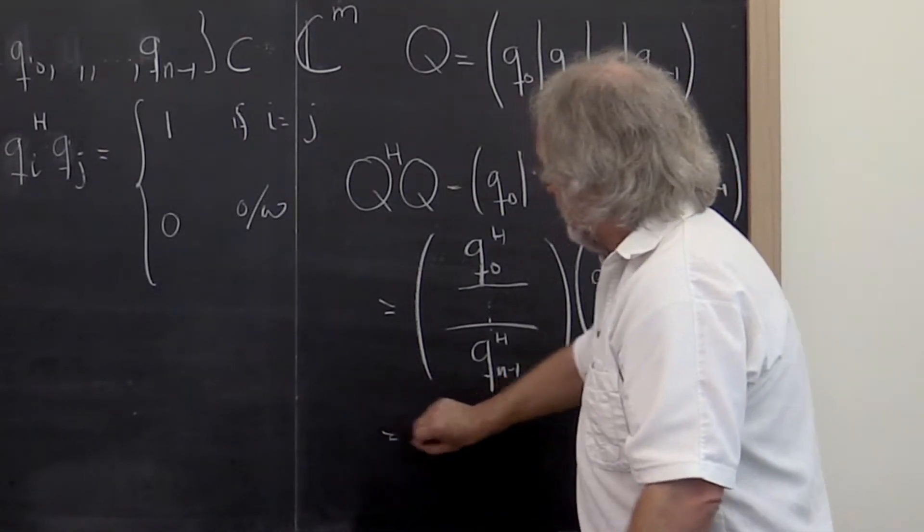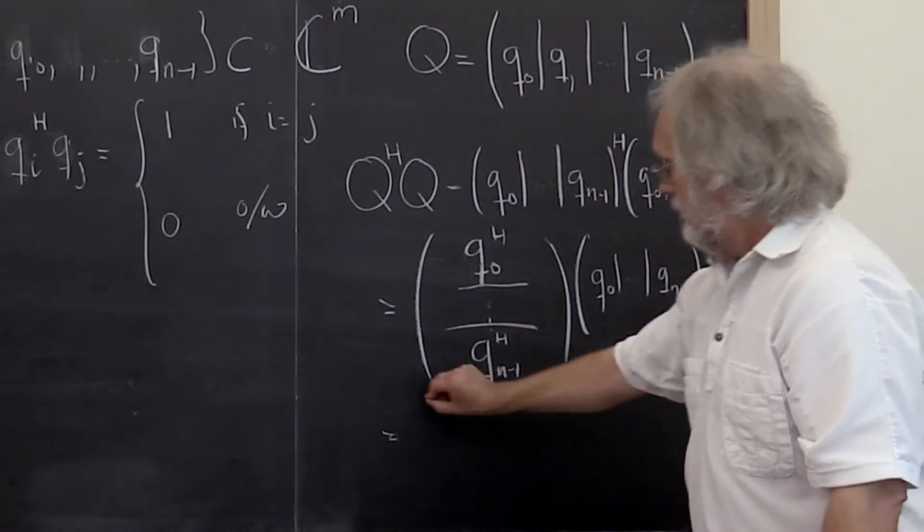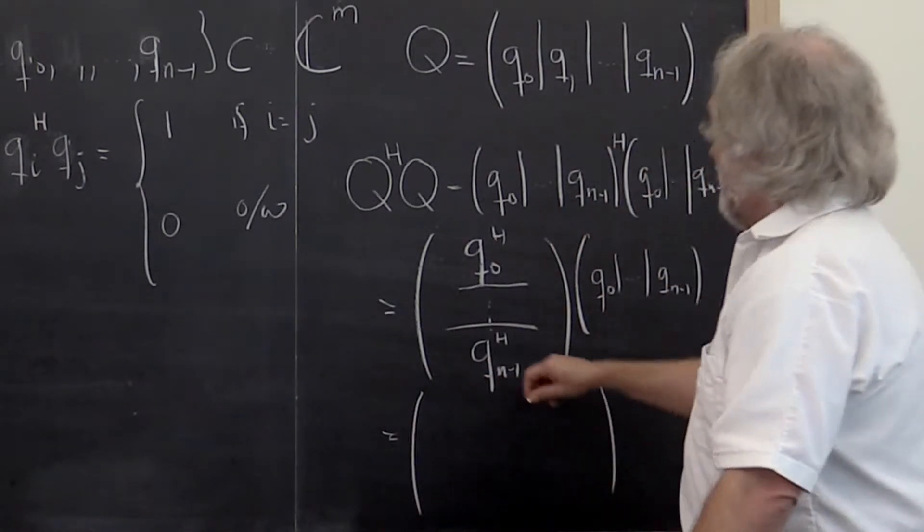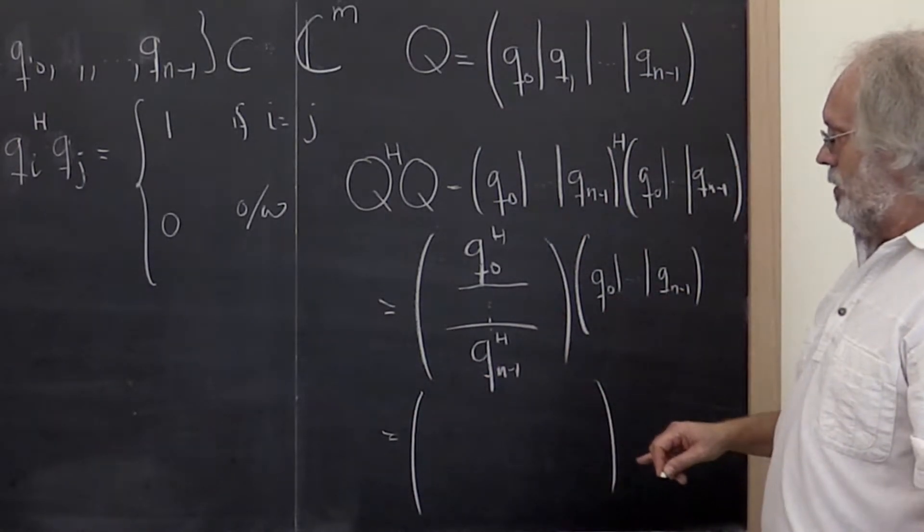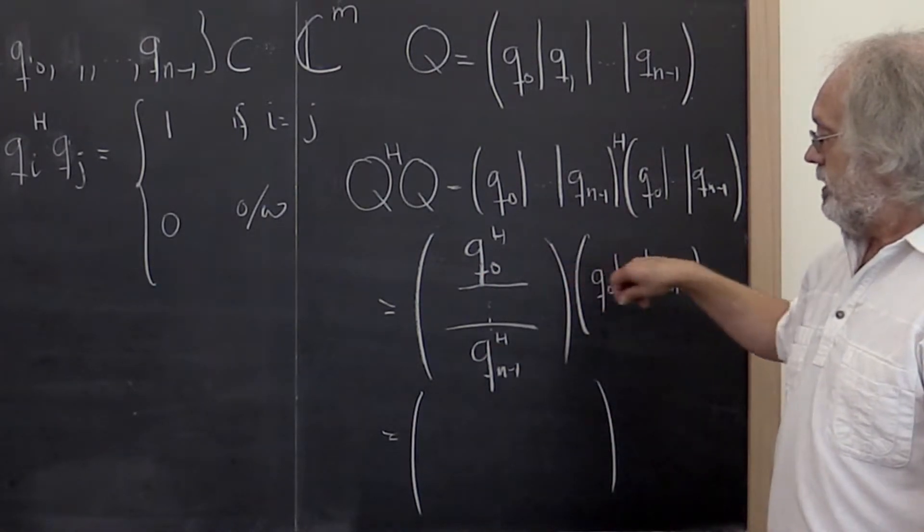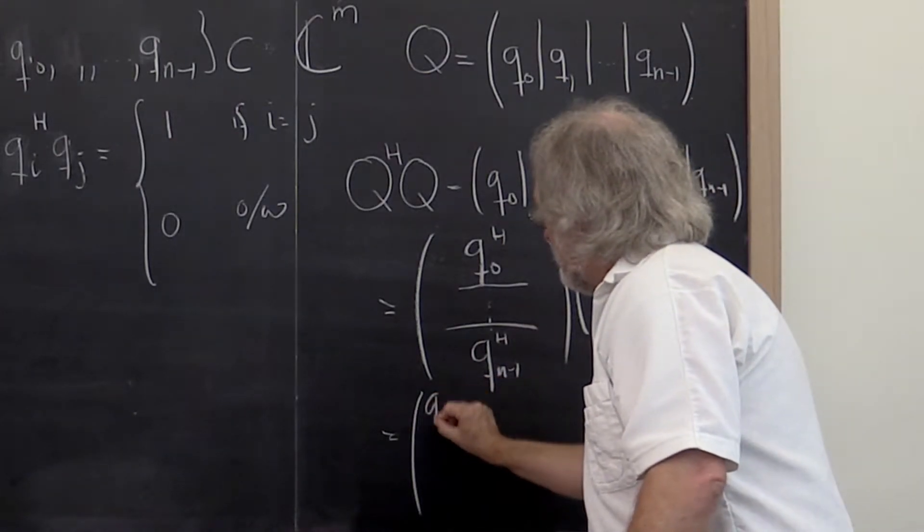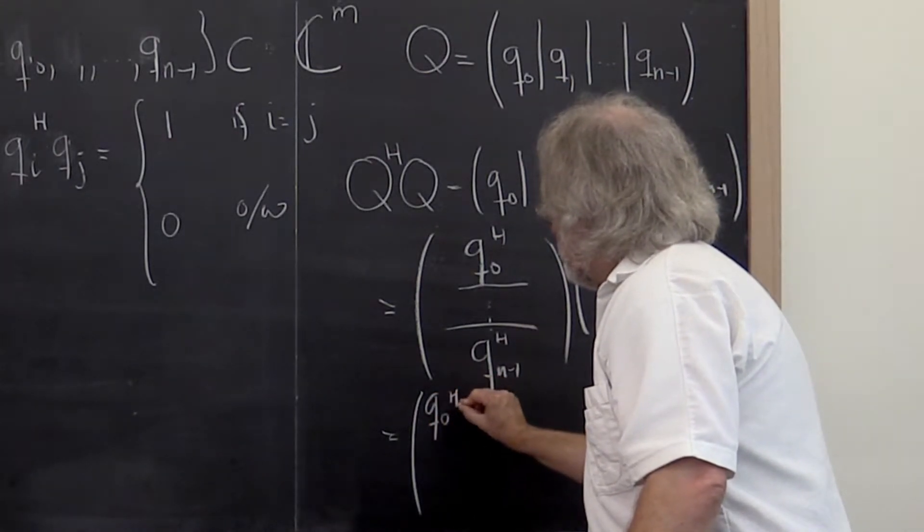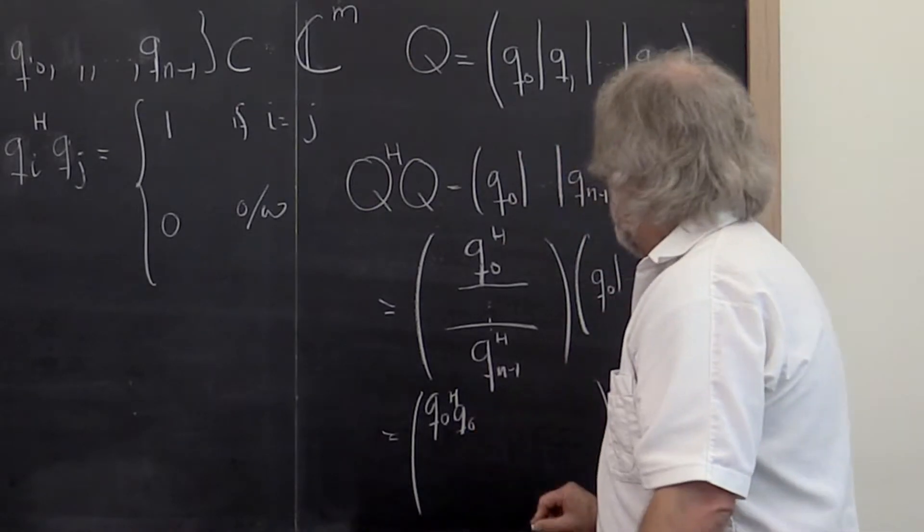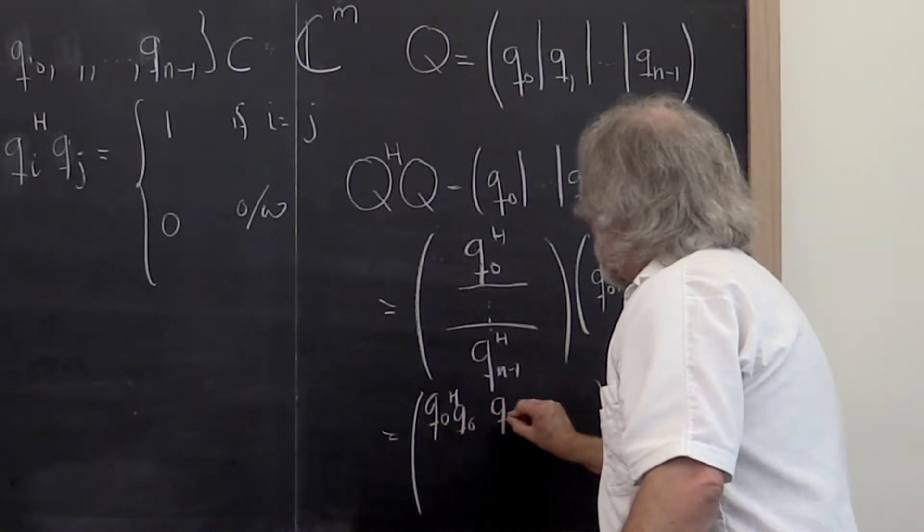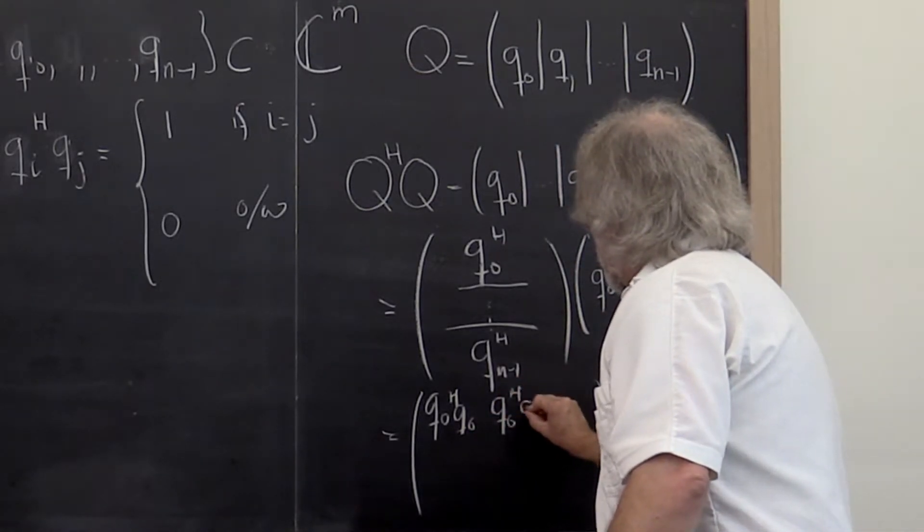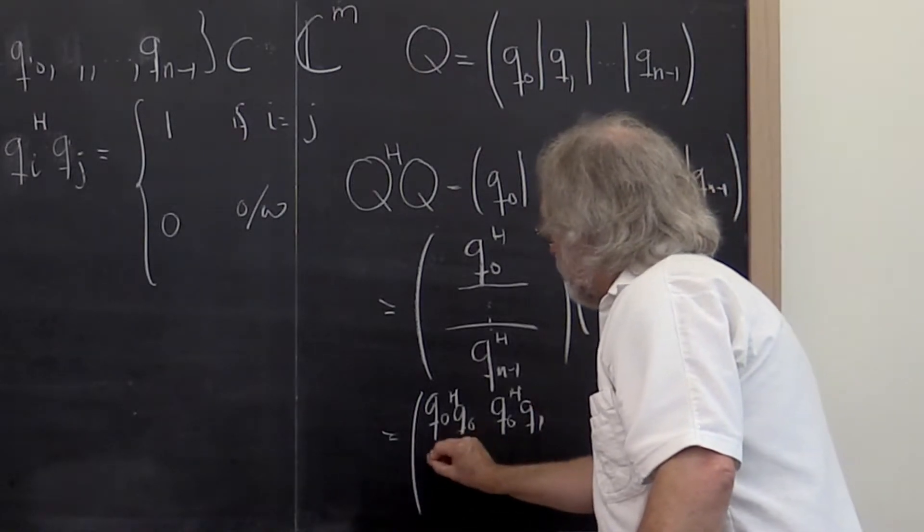And that then is, let's see, it's a n by n matrix where the entries in the matrix are the dot products of all of these columns. The first entry is q0 Hermitian q0. The second entry is q0 Hermitian q1. And so forth.